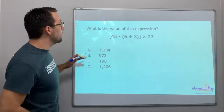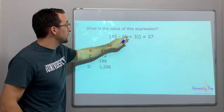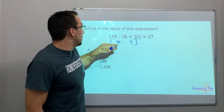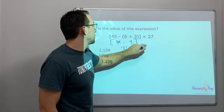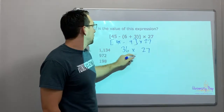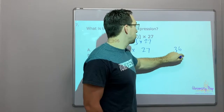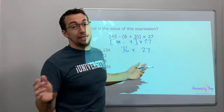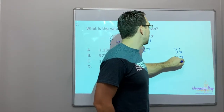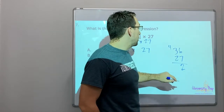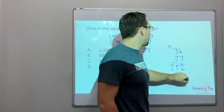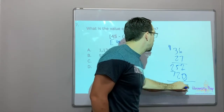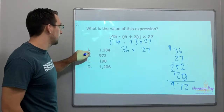Number seven — what is the value of this expression? Plain and simple: we have a double grouping. Six plus three is nine, forty-five minus nine is thirty-six inside the bracket. Now thirty-six times twenty-seven: seven times six is forty-two, seven times three is twenty-one plus four is twenty-five. Add a zero for the tens place — two times six is twelve, two times three is six plus one is seven. That gives us nine hundred seventy-two.